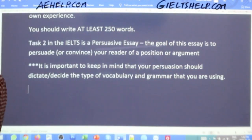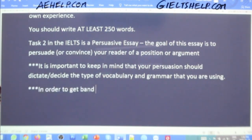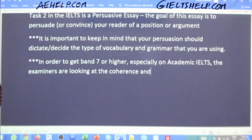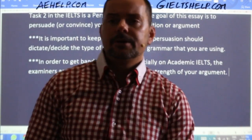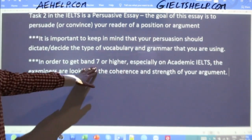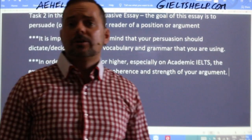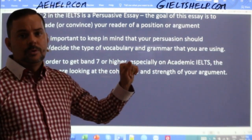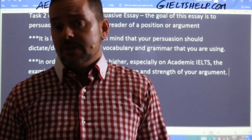One of the common mistakes I see is that students are weak in their opinion. In order to get Band 7 or higher, especially on the academic IELTS, the examiners are looking at the coherence and strength of your argument. Above Band 7, they're not just looking at whether your spelling, grammar, or vocabulary is accurate — that should be almost perfect. They're actually looking at the strength of your argument: how good of a job do you do to convince your reader of your idea?